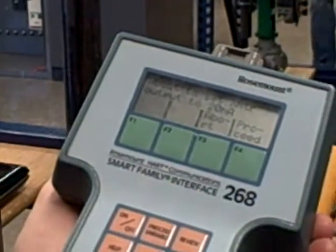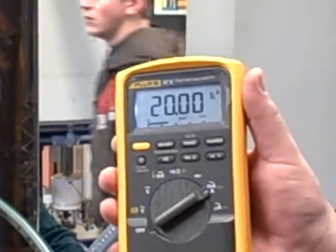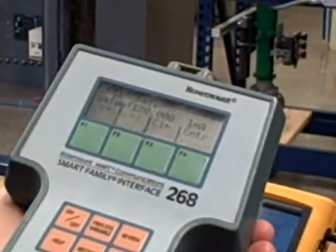About to set transmitter output to 20 milliamps. I'm going to hit the proceed button. And once again, it will ignore whatever pressure is coming in. It will just force the output to 20 milliamps. And we verify at the meter, indeed, it is at 20 milliamps.